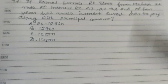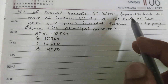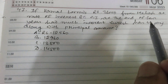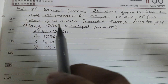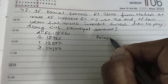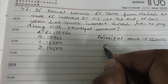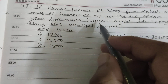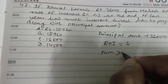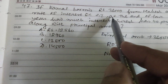Hi friends and students, this is question number 47. If Komal borrows rupees 36,000 from Mahesh at a rate of interest 6% simple interest, at the end of four years how much interest does Suresh have to pay along with the principal amount? So the principal amount is 36,000, rate of interest equals 6%, and number of years is 4.